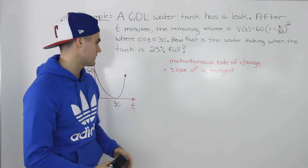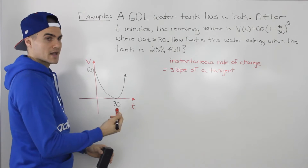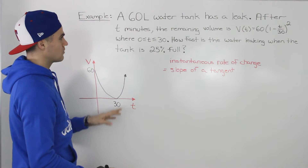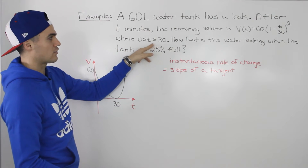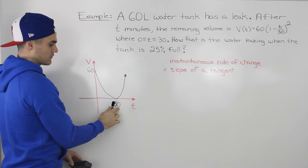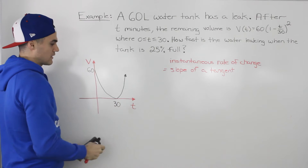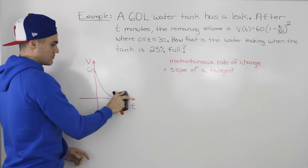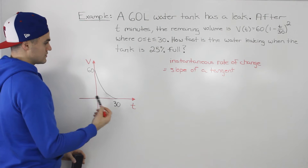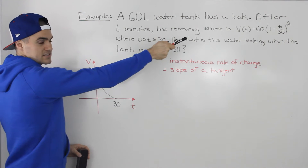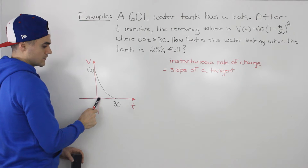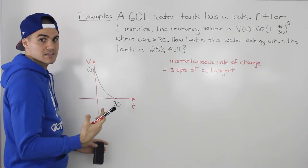If we graph this function, it's going to be a parabola that opens up, where the dependent variable is volume and the independent variable is time in minutes. This function is only defined for t between 0 and 30 minutes. The vertex occurs at t = 30, but we only draw up to that value. The tank starts full at 60 liters when t = 0, and gradually decreases to zero volume at 30 minutes, when the tank is completely empty.